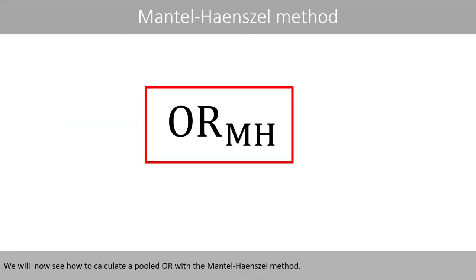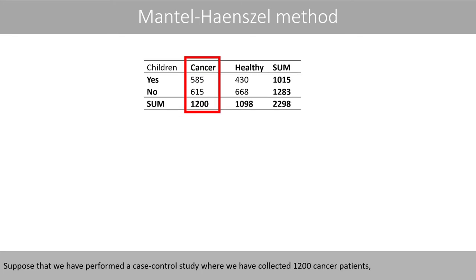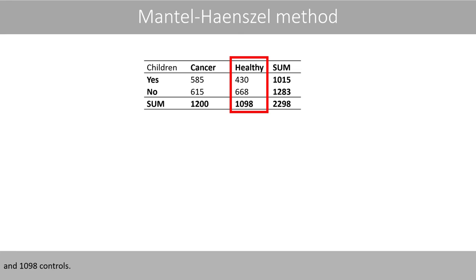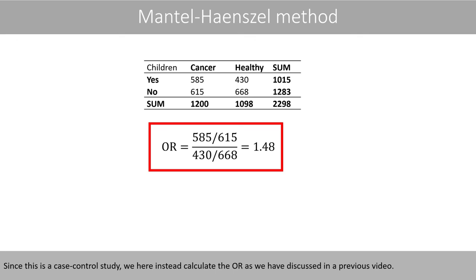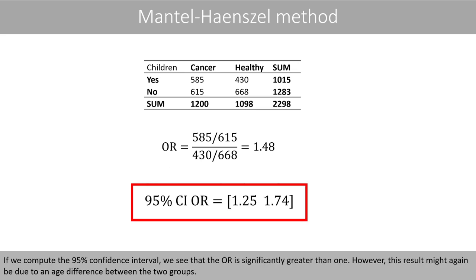We will now see how to calculate a pooled odds ratio with the Mantel-Haenszel method. Suppose we have performed a case-control study where we collected 1,200 cancer patients and 1,098 controls. In this study, one wants to investigate if having children is somehow associated with cancer. Since this is a case-control study, we calculate the odds ratio as discussed in the previous video. Computing the 95% confidence interval shows that the odds ratio is significantly greater than 1.